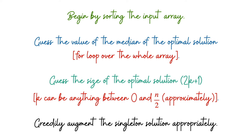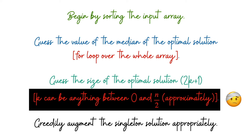Now let's address the bottleneck: the inner loop over k. We want to substitute this linear scan with a binary search. Unlike the previous problem where finding the search range was tricky, here we know k ranges from 0 to n/2. We can probe the middle easily. What's not immediately clear is: what question should we ask to decide whether to go left or right in the search?